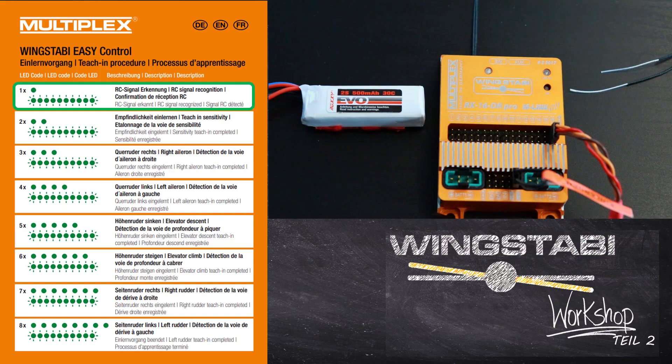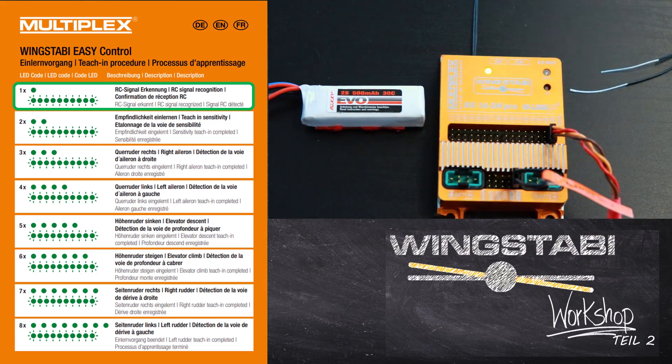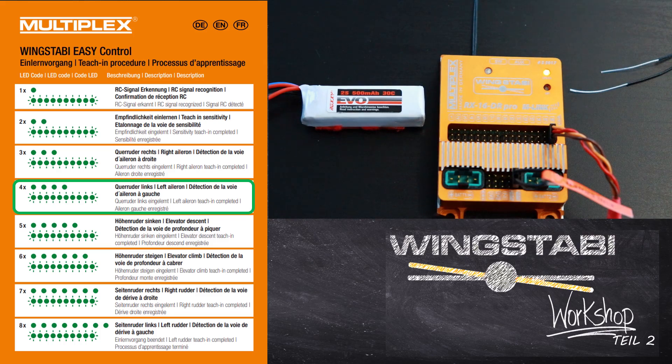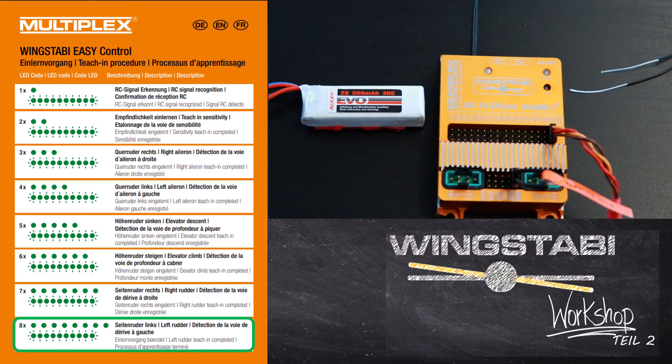Of course, you can also do the teach-in process directly on the airfield without a computer. Here you have to connect your teach-in plug with your MSB port at your Wing Stubby and then switch the Wing Stubby on. Now there will be no difference anymore between the teach-in process with the launcher. First Wing Stubby searches for the RC connection. Then Wing Stubby answers with fast flashing of the LED. Here you have to count the number of flashes of the LED and then compare it with your teach-in card. After you have made the 8 steps, your teach-in process is also completed.